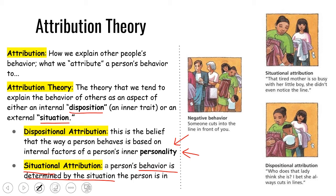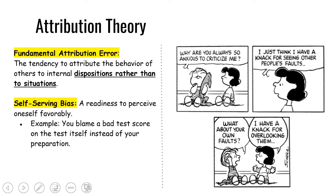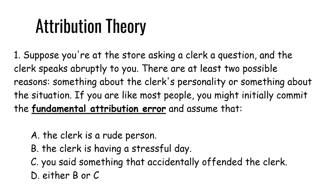Most people make a really common error in attribution — it's so common we call it the fundamental attribution error. The fundamental attribution error is our tendency to say that a person is acting or thinking a certain way because that's just who they are. It's always taking the dispositional attribution rather than also looking at the situation. For example, suppose you're at the store asking a clerk a question and the clerk is grumpy and speaks abruptly to you. There are at least two possible reasons: something about the clerk's personality makes him act that way, or something about the situation is causing it. If you're like most people, you would initially commit the fundamental attribution error — concluding this is just how he is, he's just a mean person.